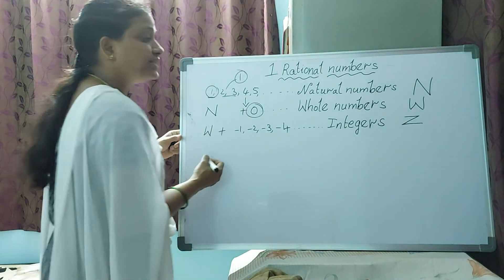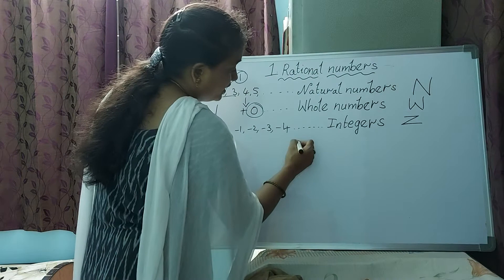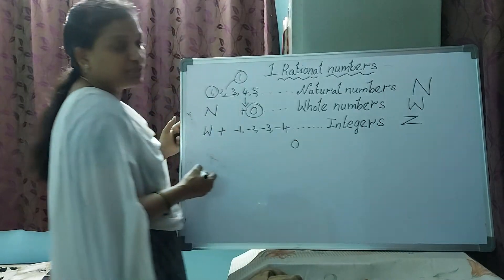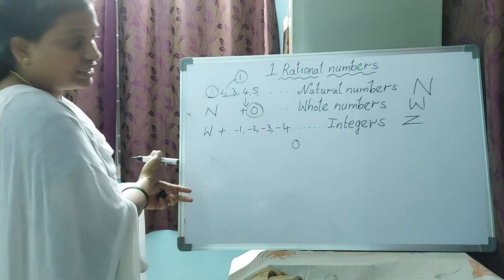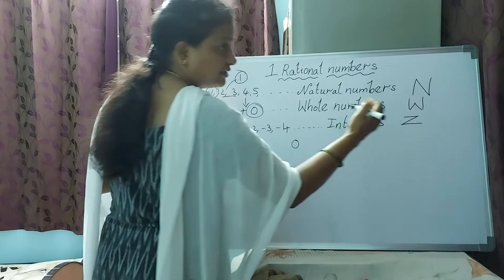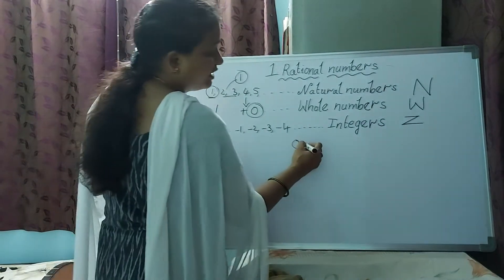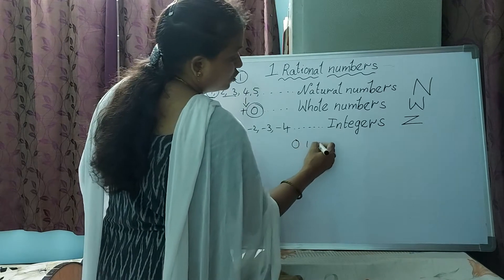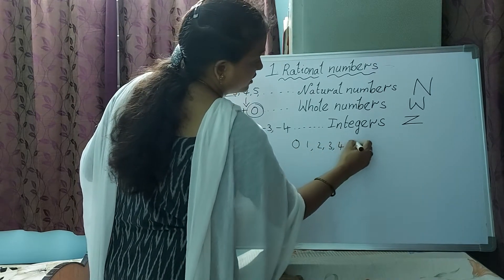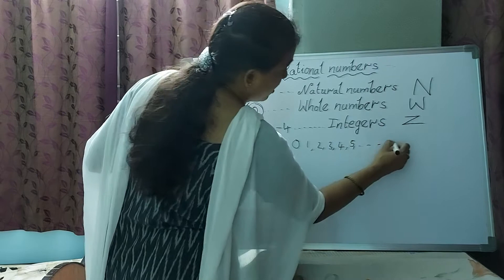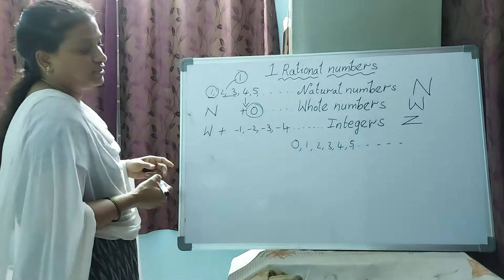How do we write integers? Zero is in the middle — negative numbers are on the left-hand side and positive numbers are on the right-hand side. After 0, you write 1, 2, 3, 4, 5, 6... — from here these are all whole numbers.